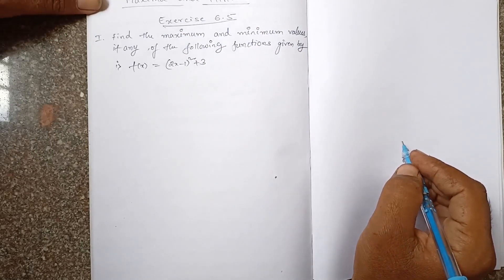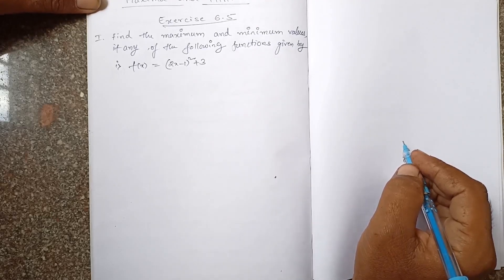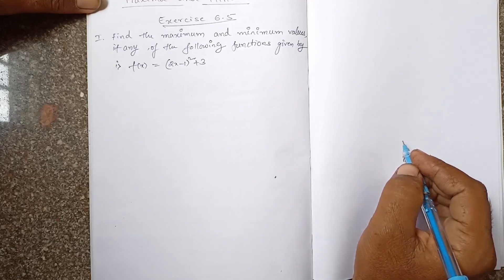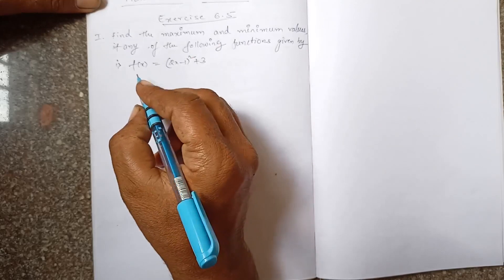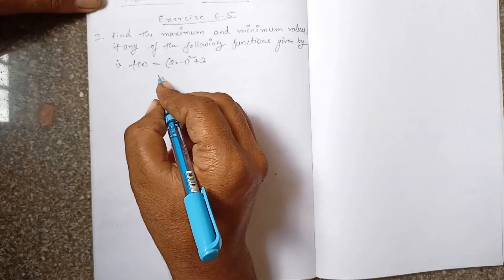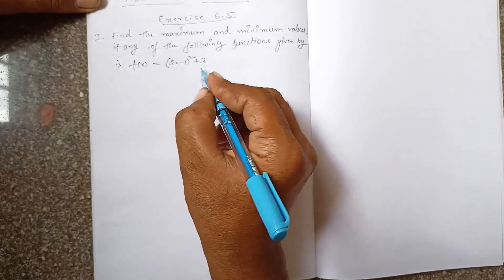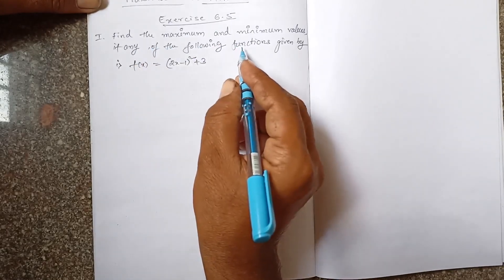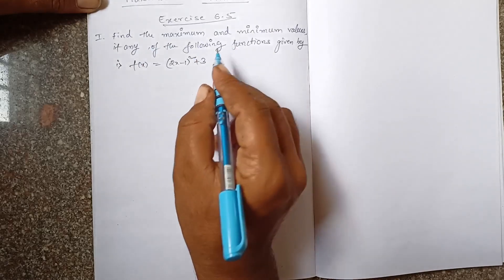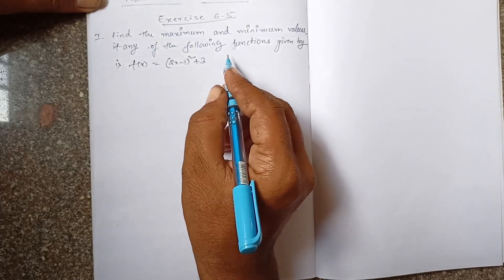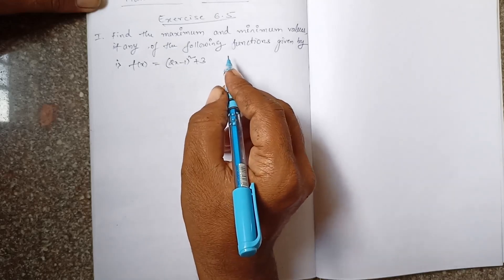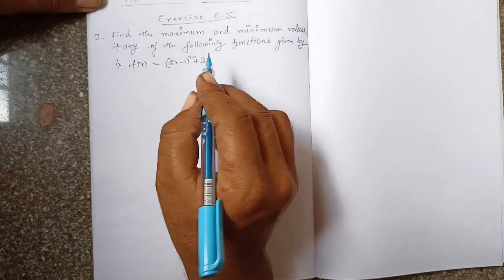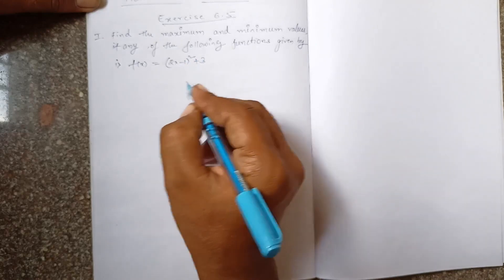Under that, first main: find the maximum and minimum values, if any, of the functions given by. This means if maximum and minimum values exist, you find those. The first question is f(x) = (2x-1)² + 3. We need to find its maximum and minimum value - they are not asking for local maximum or local minimum value. You should not go for a derivative test here.